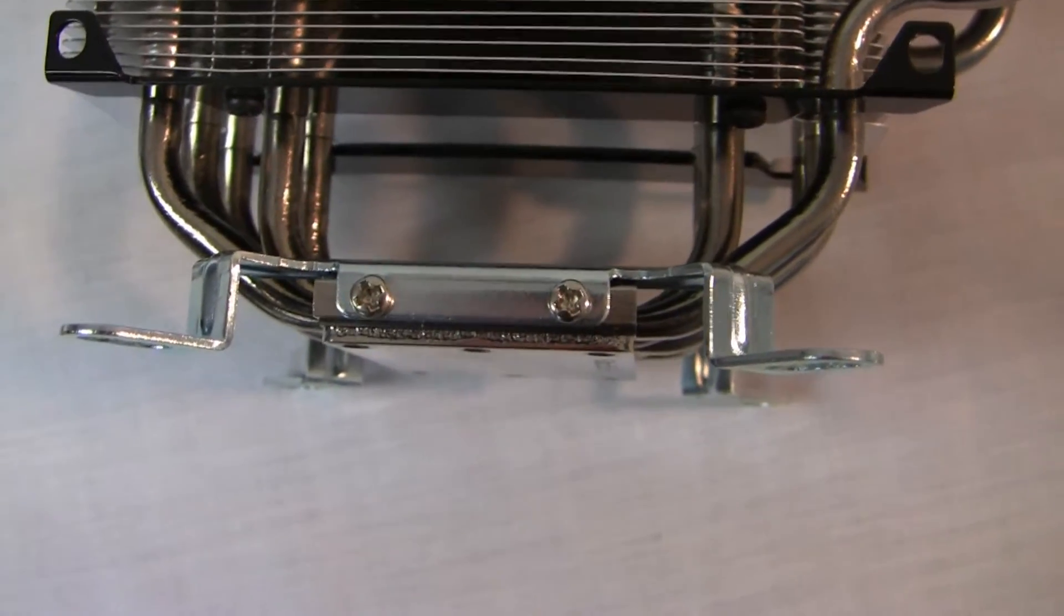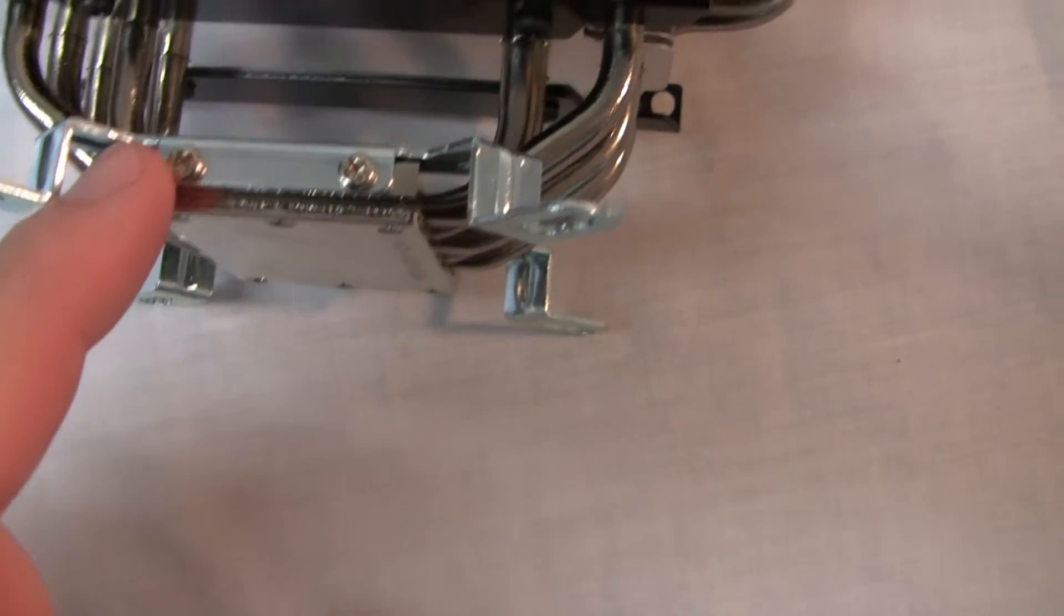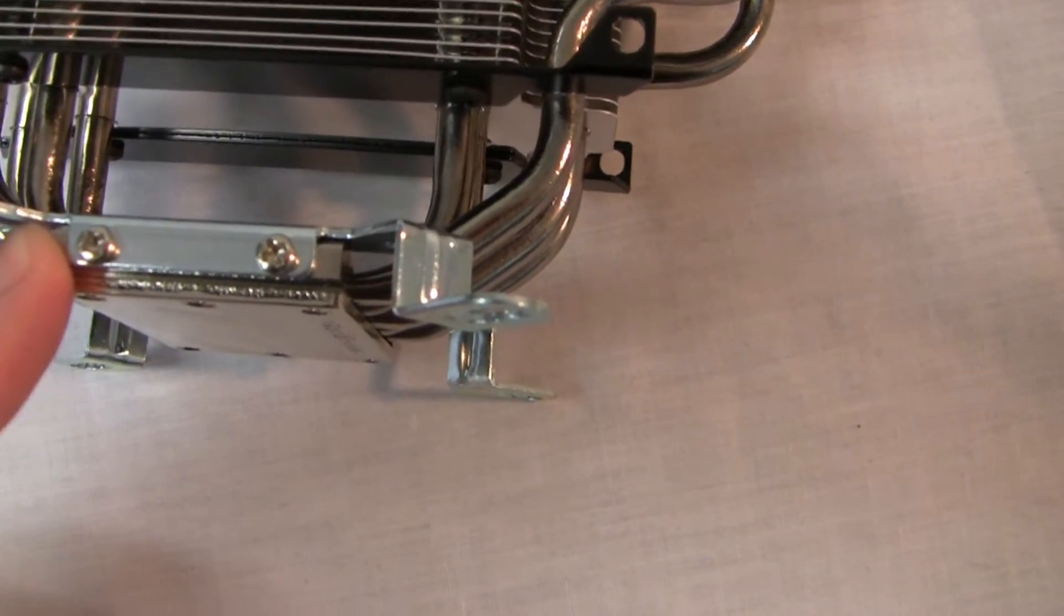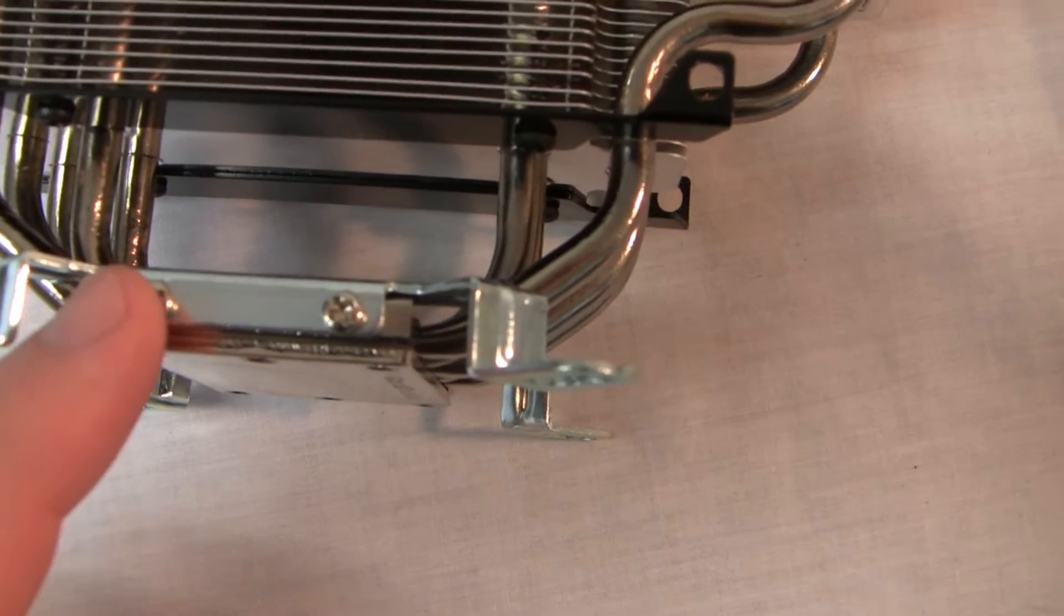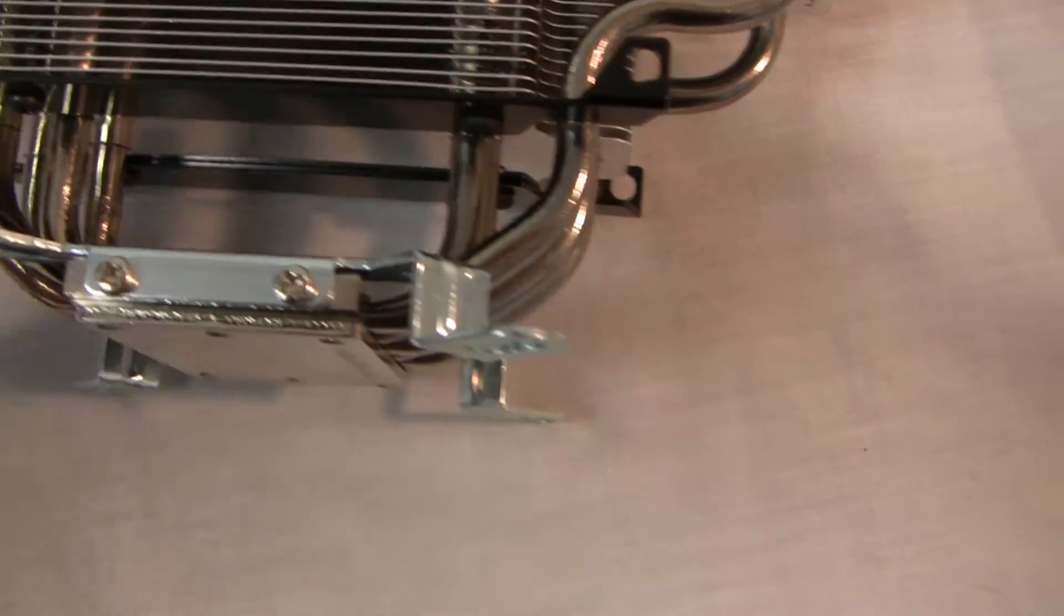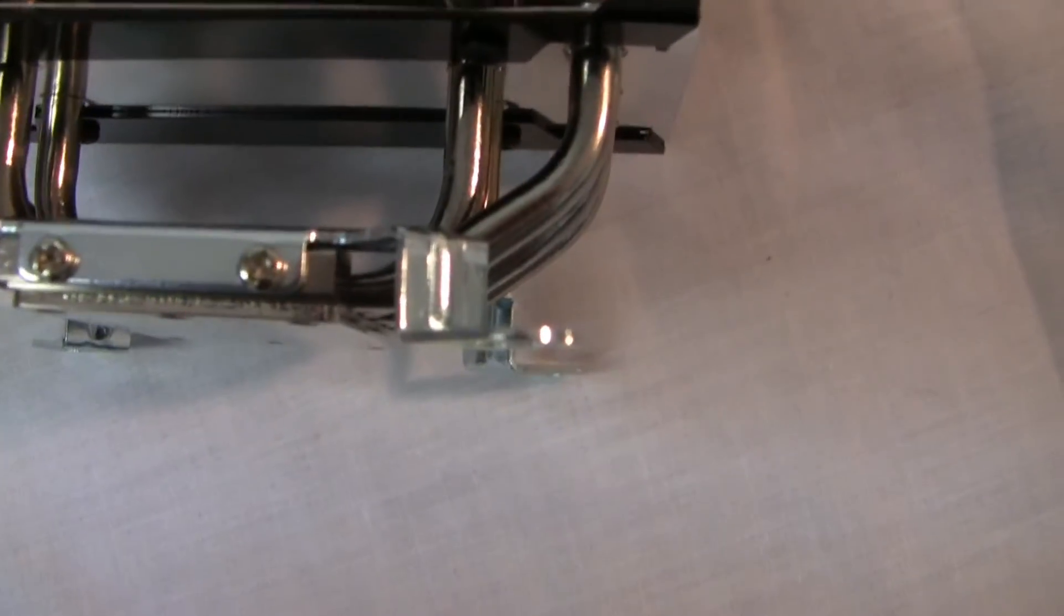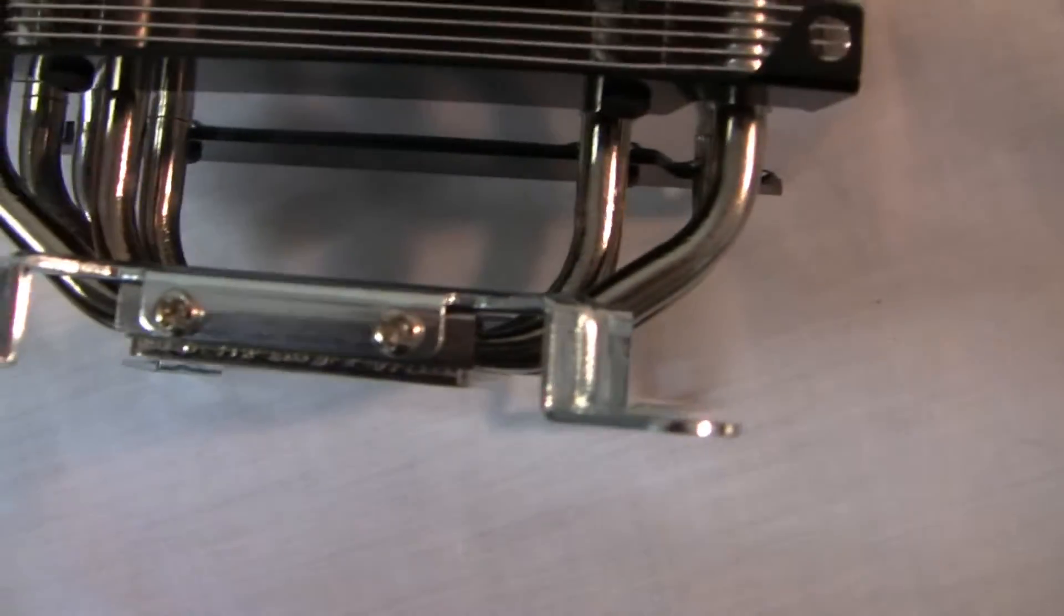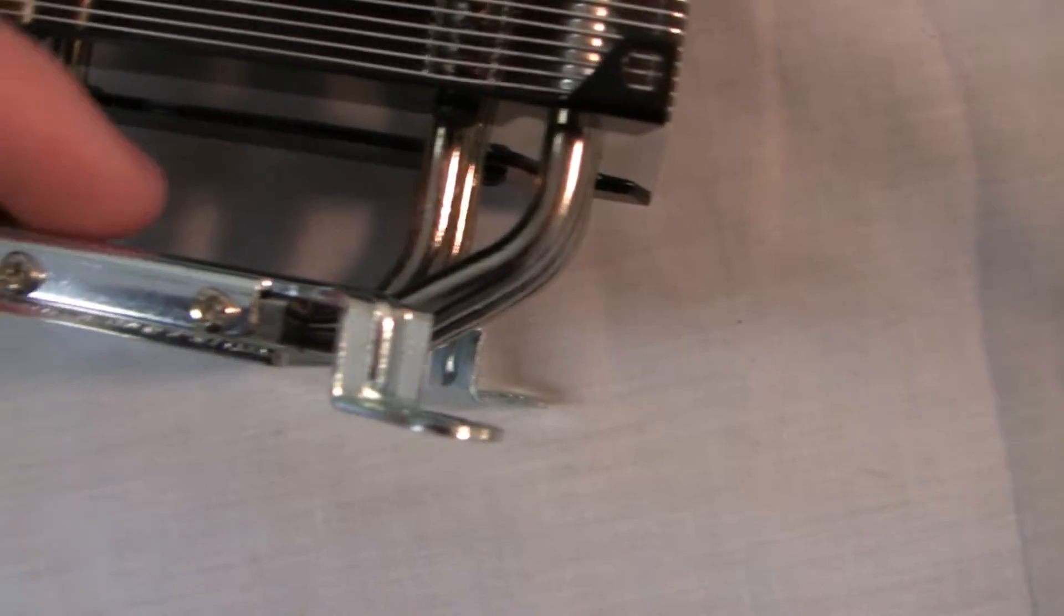The first thing you'll want to do is mount these brackets to the base or the heat sink using the four screws that are included. Since I'm installing this on an Intel CPU motherboard, I've mounted them onto the outside. If you're mounting this to an AMD CPU, the only difference is instead of on the outside, you'll run them through on the inside.